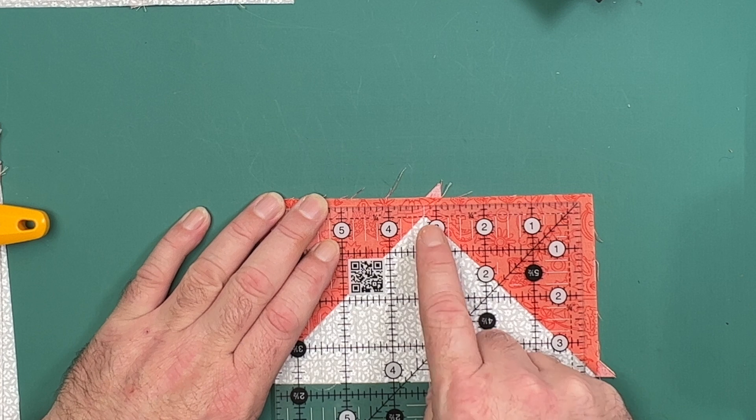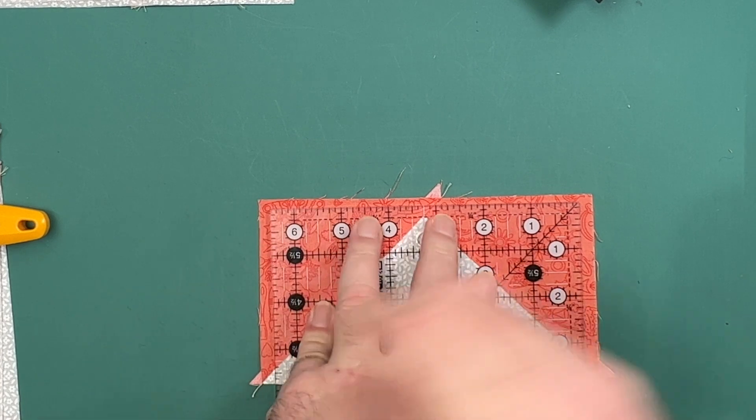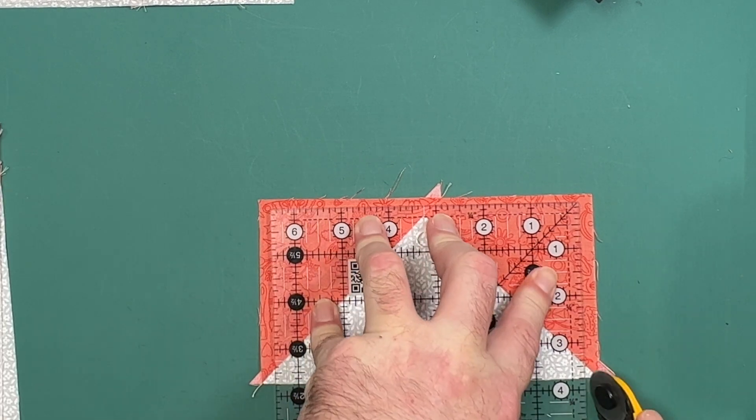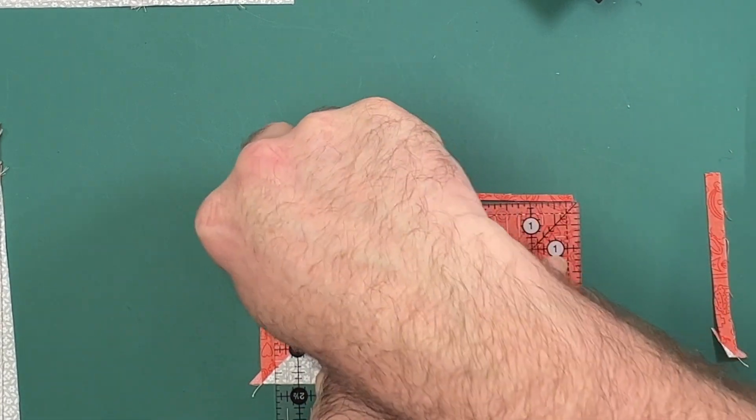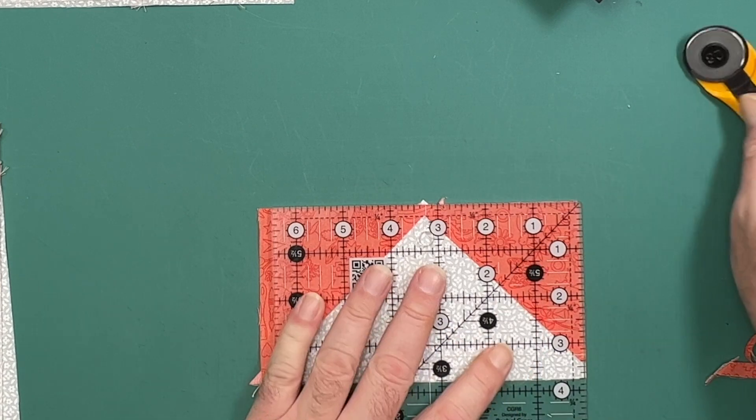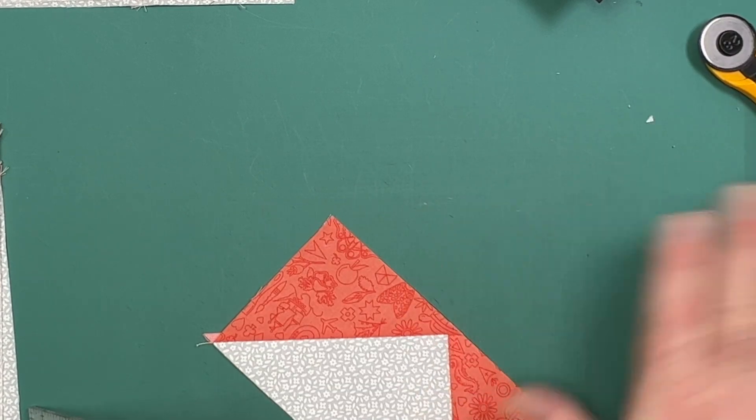Making sure that we have a quarter of an inch above that peak, we can take a reference from the bottom of the block so that we know that it's straight as that is our original edge from the large square that we cut. We then trim away those first two sides.